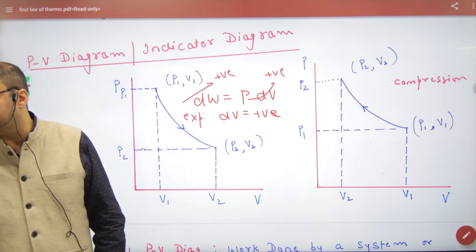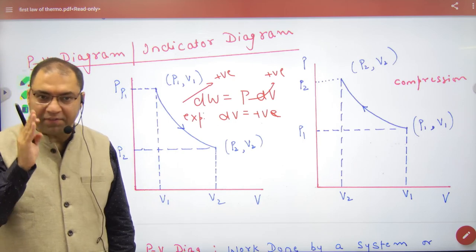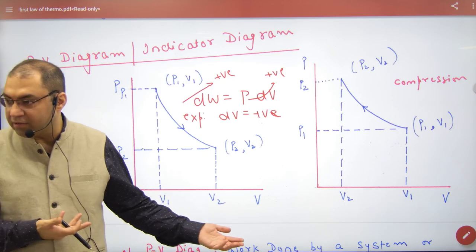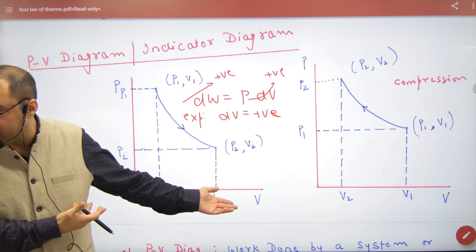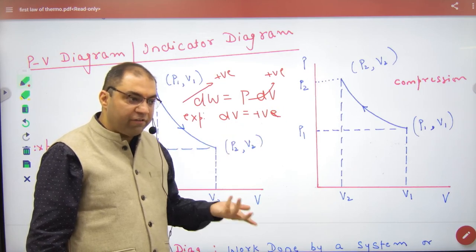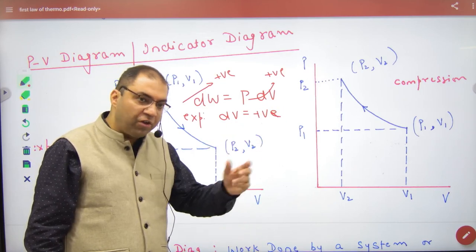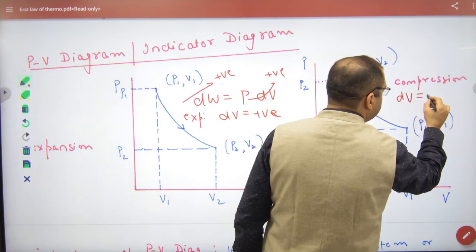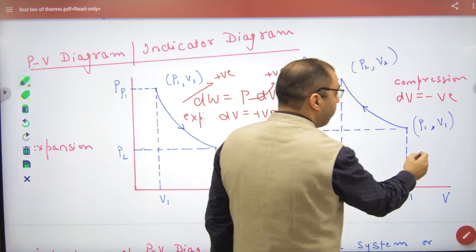Because mathematically I am doing positive. I am giving mathematical proof that dv positive. Mathematically work done pdv, dv positive, Expansion work done positive. And if compression, dv is negative, work done is negative.